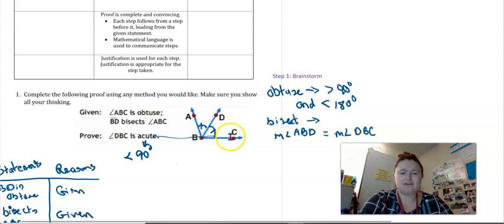So DBC being this angle right here. So we need to sort of dissect what we know. We know that obtuse means that we've got to be more than 90 but less than 180. We know that bisect tells me that the angle ABD is going to be the same thing as angle DBC.